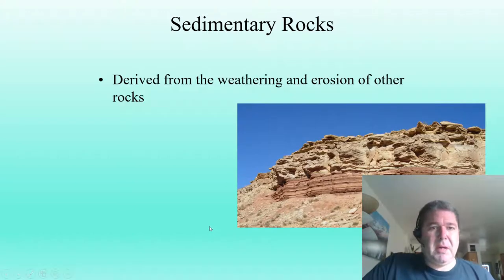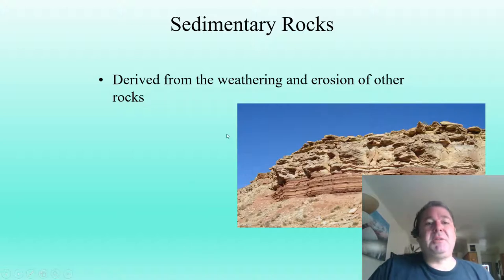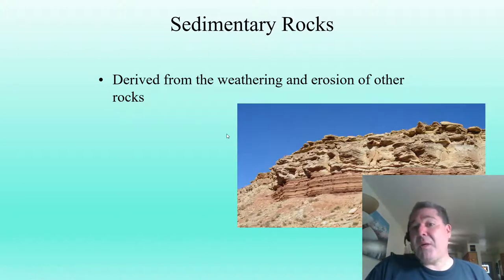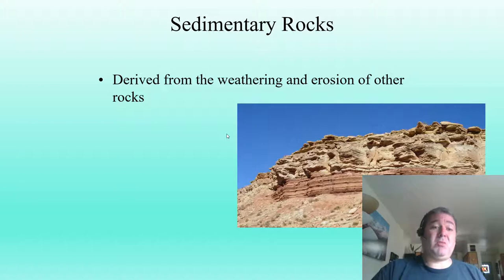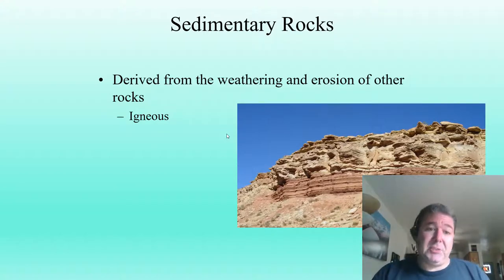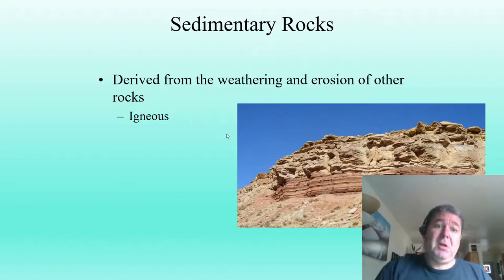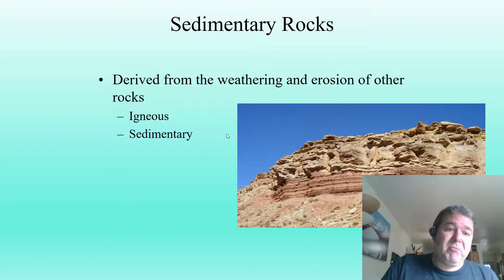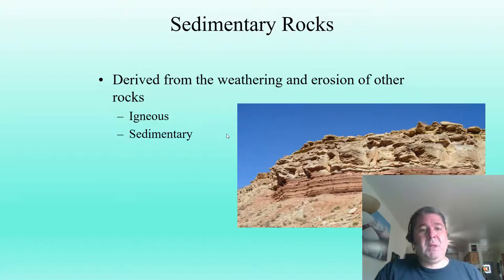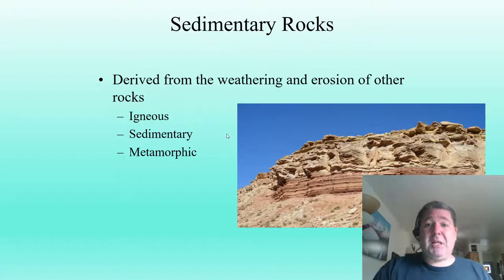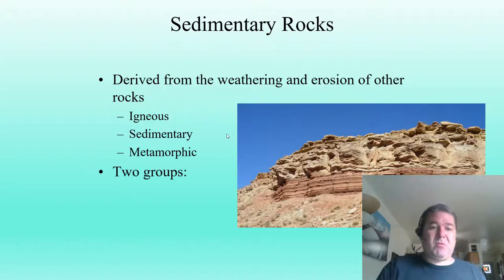This chapter is all about sedimentary rocks. Sedimentary rocks are derived from the weathering and erosion of other rocks — igneous rocks, which are kind of our parent of all rocks, other sedimentary rocks, and of course metamorphic rocks. So we can make sediment from any of these types of rocks.